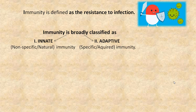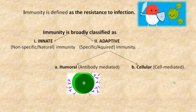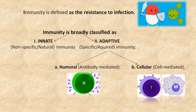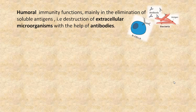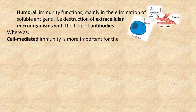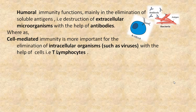The adaptive immunity is also classified into two: humoral, that is antibody-mediated immunity, and cellular, that is cell-mediated immunity. Humoral immunity functions mainly in the elimination of soluble antigens, that is destruction of extracellular microorganisms with the help of antibodies, whereas cell-mediated immunity is more important for the elimination of intracellular organisms such as viruses, with the help of cells, that is T lymphocytes.